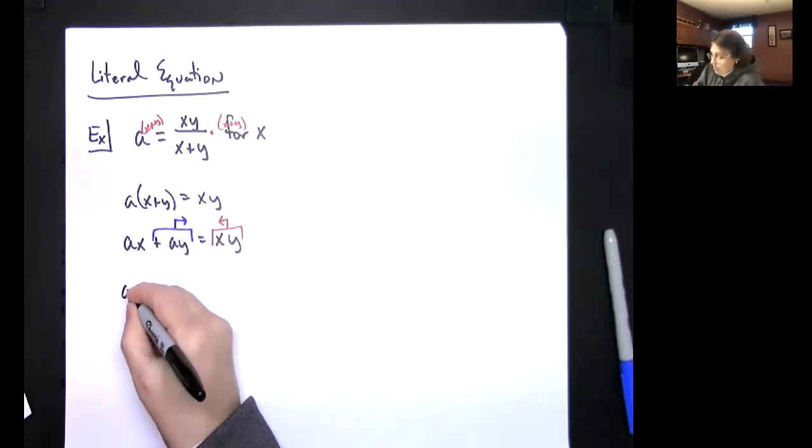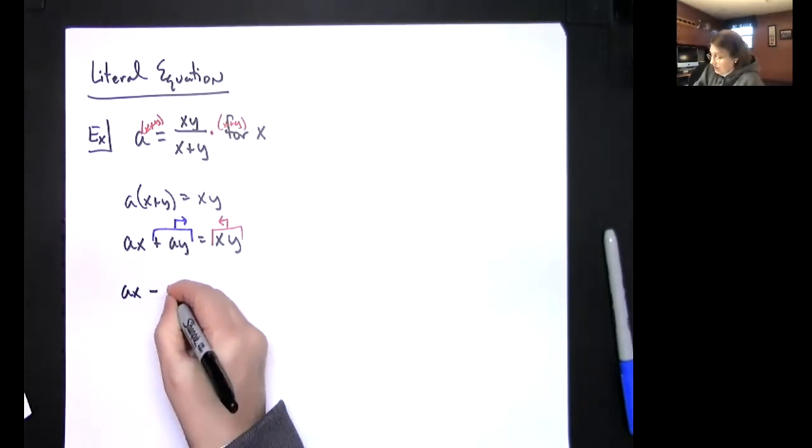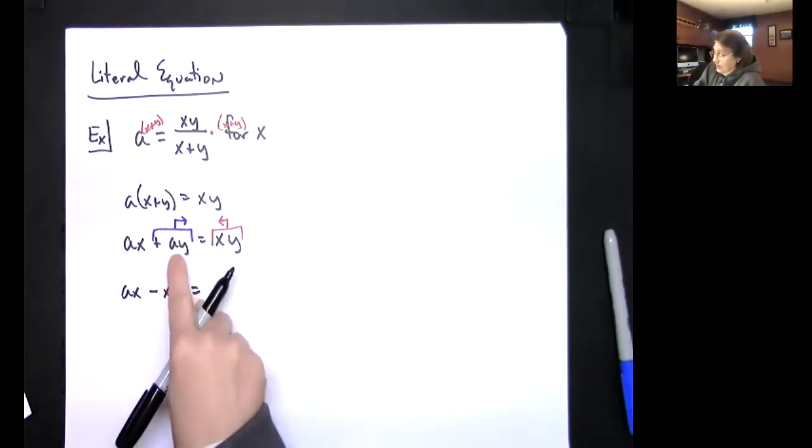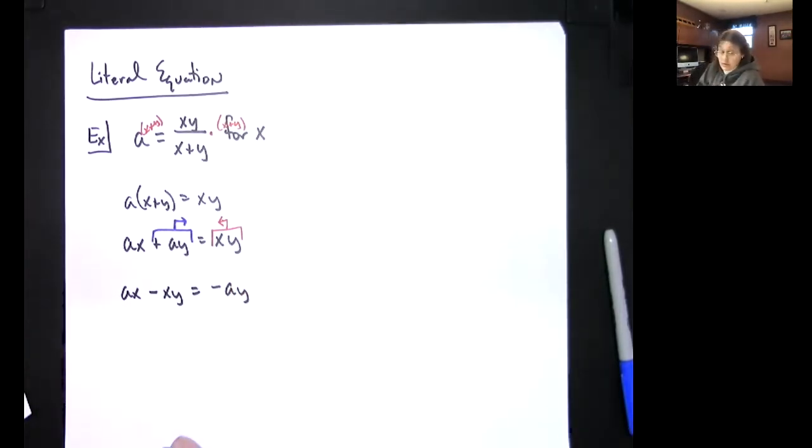So this ax is going to stay put. Then I'm going to minus xy from the left-hand side there. I'm going to go ahead and minus that from the other side, so I'll have a negative ay on this side.